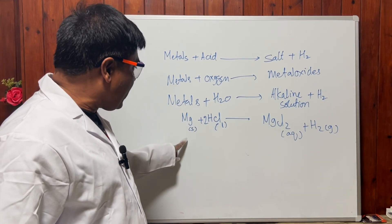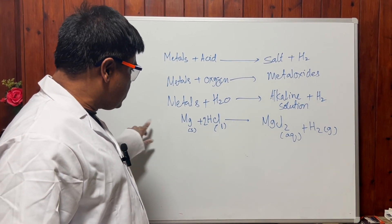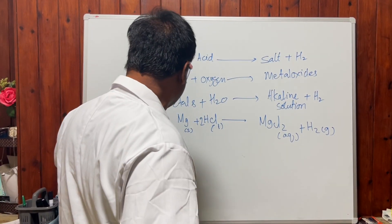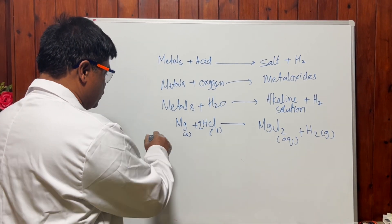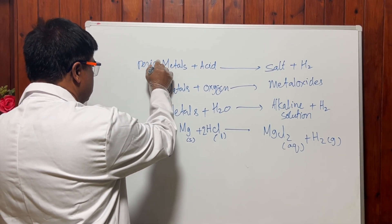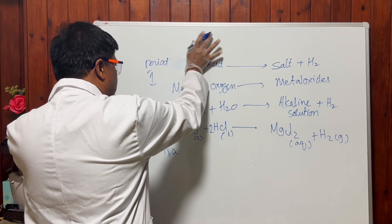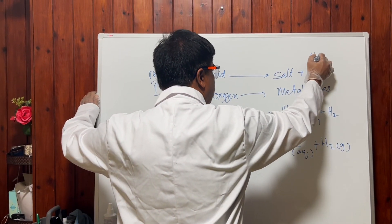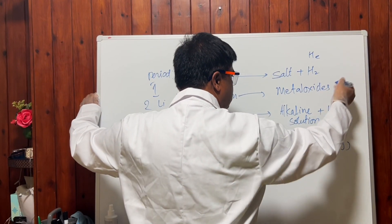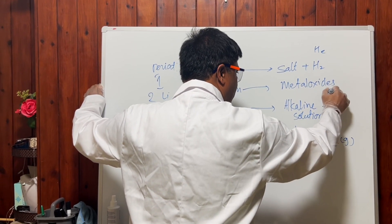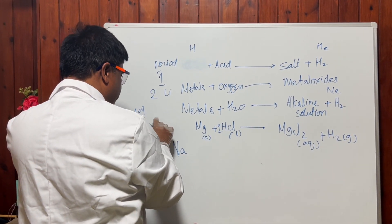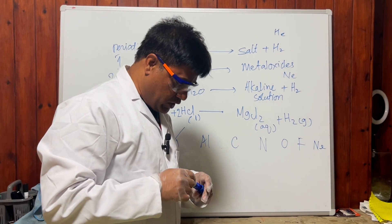I will come back with one more metal from period 3. In period 3 we have sodium — I have already made a video on sodium metal. Period 1 has hydrogen and helium, period 2 has lithium continuing to neon at group 8, and period 3 has sodium, magnesium, and so on. Magnesium is a light metal.